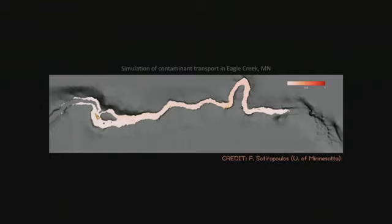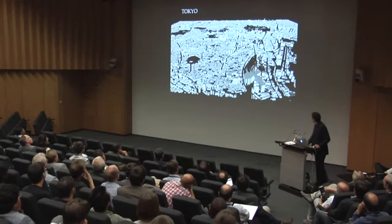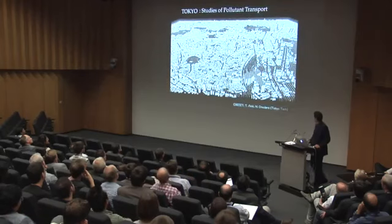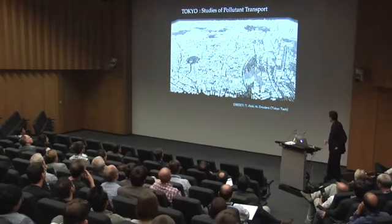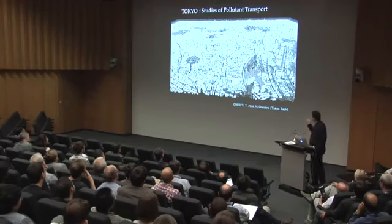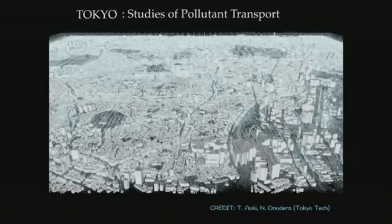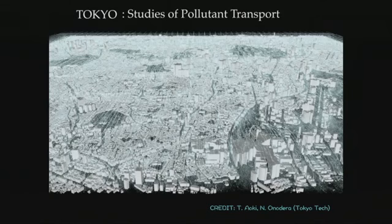We move to one of my favorite places on Earth: Tokyo. In Tokyo, people are very much concerned about pollution. Takayuki Aoki and his group are using 4,000 GPUs to simulate flow around all the buildings of Tokyo. They reconstructed the whole city, and you can play the simulation and look at what happens in Shinjuku, Shinagawa, Ginza, and wherever you'd like. This is an amazing simulation used for architectural planning.